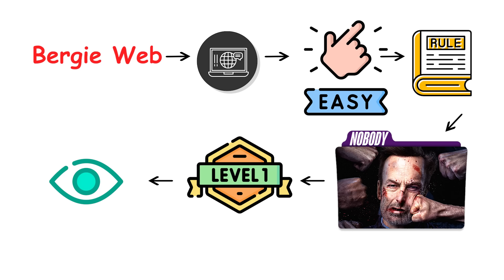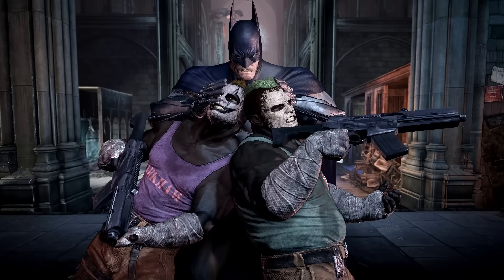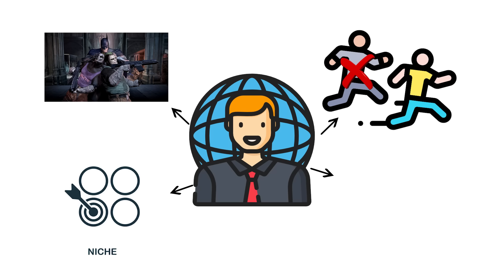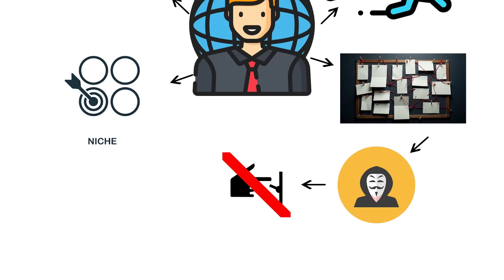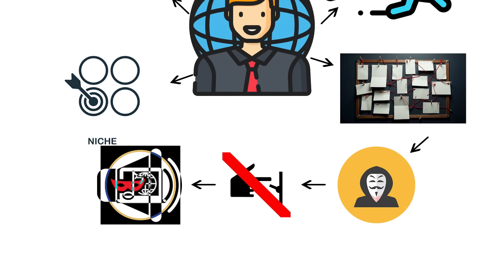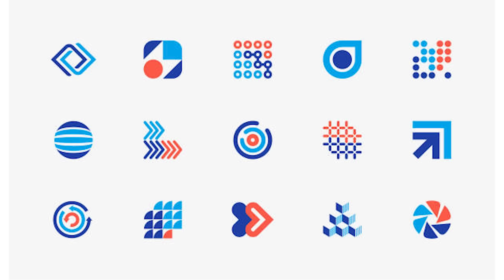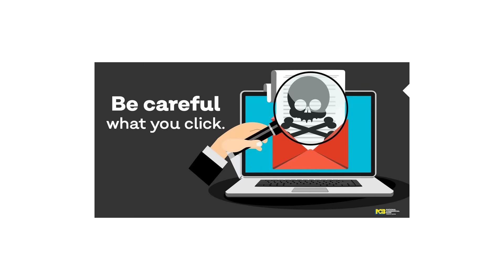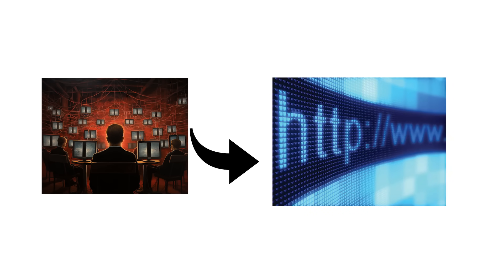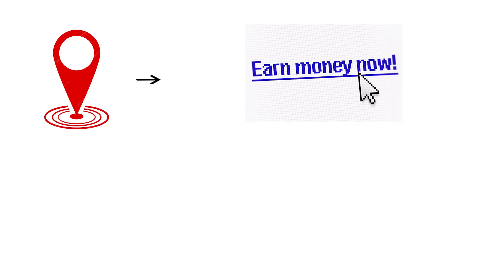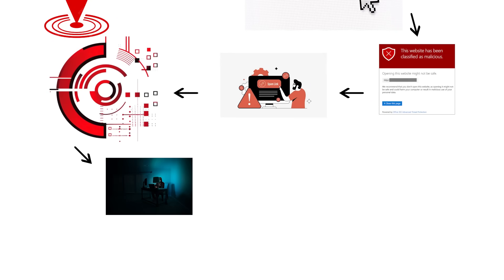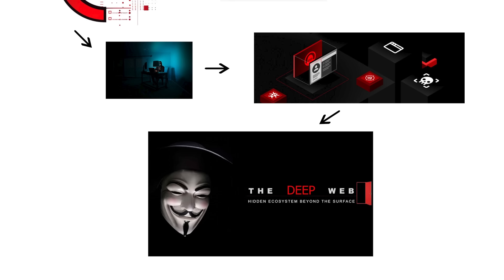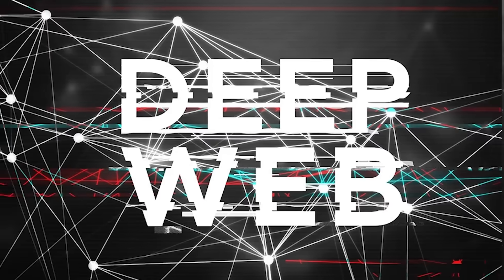Unlike level one, which rewards visibility, this level values secrecy and survival. Creators don't chase clicks — they dodge takedowns. Communities form around niche obsessions, from conspiracy boards to early hacker circles, and thrive on the feeling of being just out of reach. You'll notice how the tone changes here: fewer company logos, more raw text, more anonymity, and there's something oddly magnetic about that. It's chaotic, unpredictable, and unfiltered — the wild frontier of the accessible internet. You can spot this level when a link feels risky, when you hesitate before clicking enter. And yet you keep going. The digital water gets darker, the air gets colder, and waiting below, the deep web opens like a black gate.